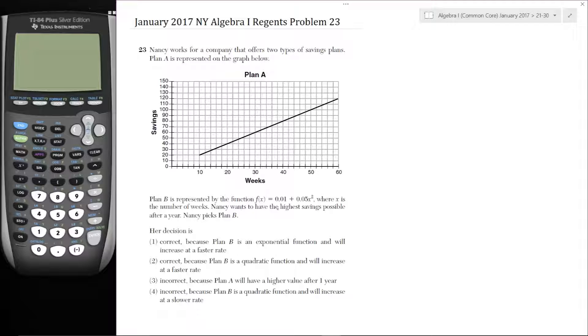Nancy wants to have the highest savings possible after a year. Nancy picks plan B. Her decision is either correct or incorrect. Correct because plan B is an exponential function and will increase at a faster rate. Or correct because plan B is a quadratic function and will increase at a faster rate. Or incorrect because plan A will have a higher value after one year. Or incorrect because plan B is a quadratic function and will increase at a slower rate.